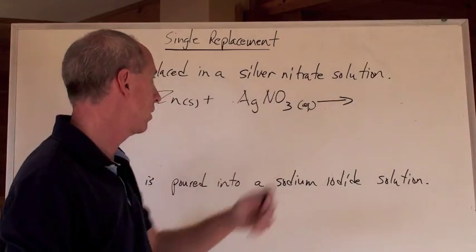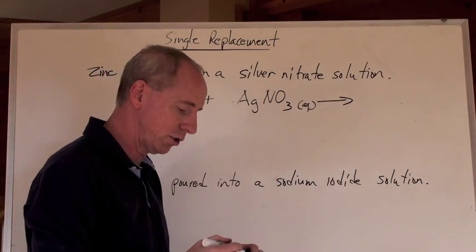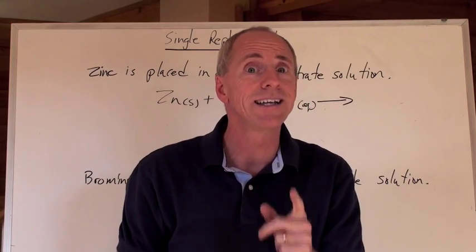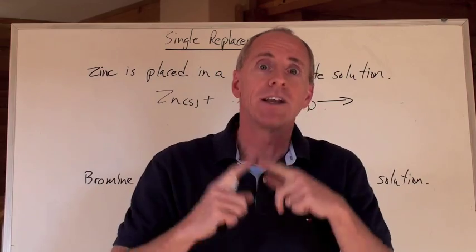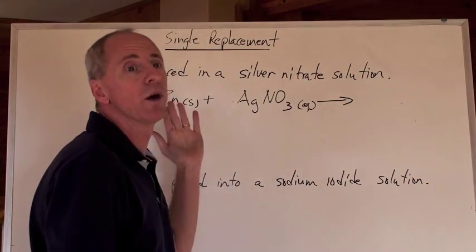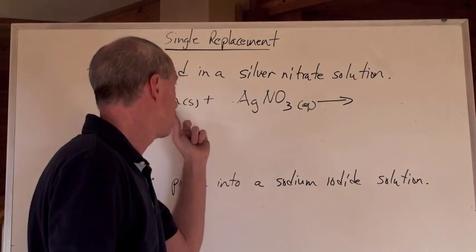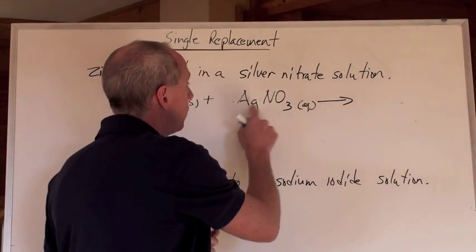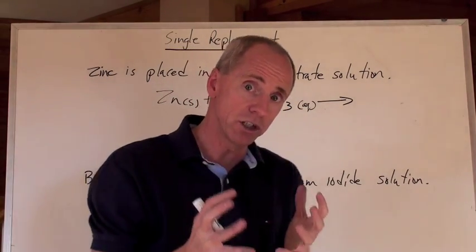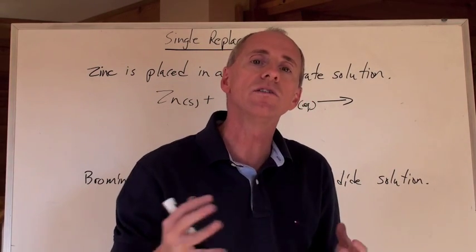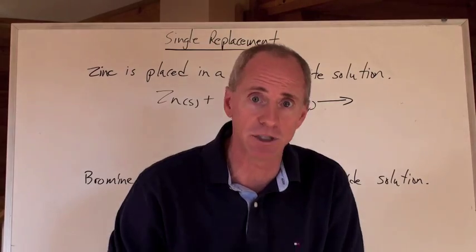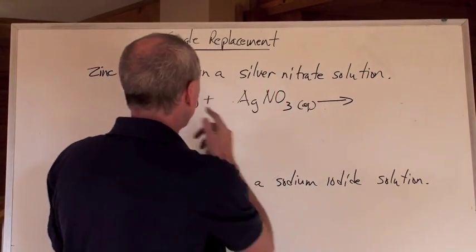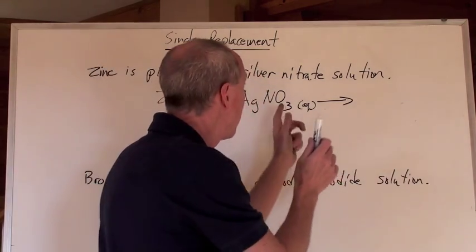What's it going to form? Zinc solid reacts with silver nitrate solution. Zinc is a metal, and so is silver. Because both of them are positively charged ions called cations, they don't bond together. The cation from zinc — which is just zinc metal right now, not a cation — is going to go with the anion, the negative ion on the other side, which is the NO3 with a negative 1 charge. What is the charge of zinc on the periodic table? You have to look it up. Zn is a 2 positive charge. So you put together Zn with a 2 positive and NO3 with a negative 1.